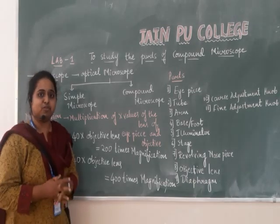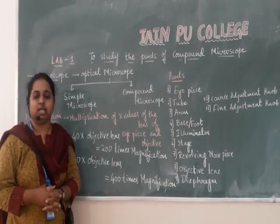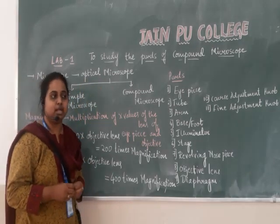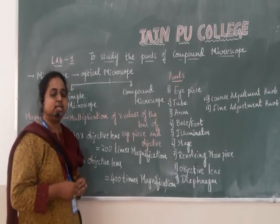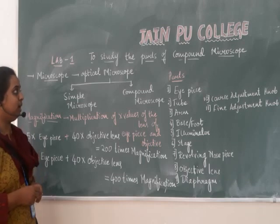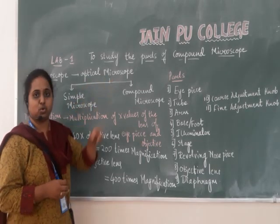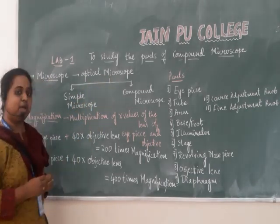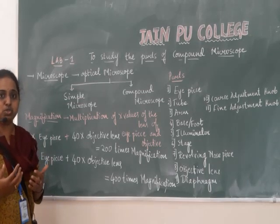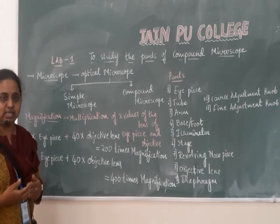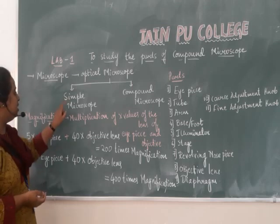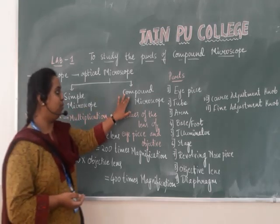When you look at the types of microscopes, there are basically three types: the first is optical microscope, the second is fluorescent, and the third is electron microscope. For this practical, we will be making use of optical microscopes. Optical microscopes make use of light and lenses. Within optical microscopes, there are two types: simple microscope and compound microscope.